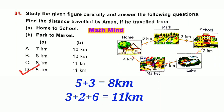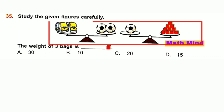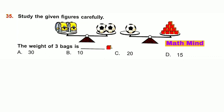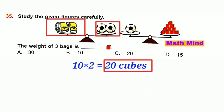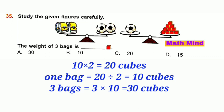Question number 35: The weight of 3 bags is how many cubes? From the figure, 1 ball equals 10 cubes. So 2 balls equal 10 × 2 = 20 cubes. 2 bags equal 2 balls equal 20 cubes. Therefore 1 bag equals 1 ball equals 10 cubes. 3 bags equal 3 × 10 = 30 cubes. Option A is correct: 30 cubes.